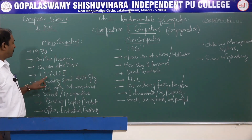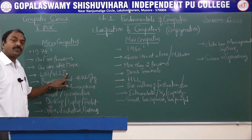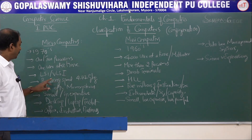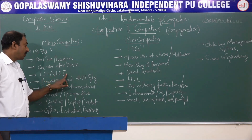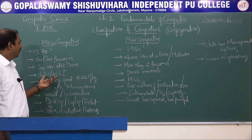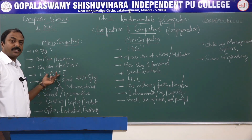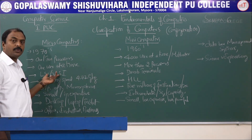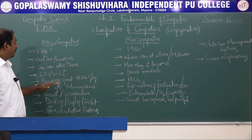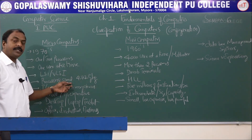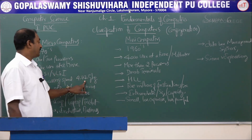Microcomputers use LSI and VLSI technology, which you studied under the fourth generation of computers. LSI stands for Large Scale Integration and VLSI stands for Very Large Scale Integration — more transistors placed on a silicon chip to form one microprocessor. The processing speed is measured in terms of gigahertz, for example 4.77 GHz.